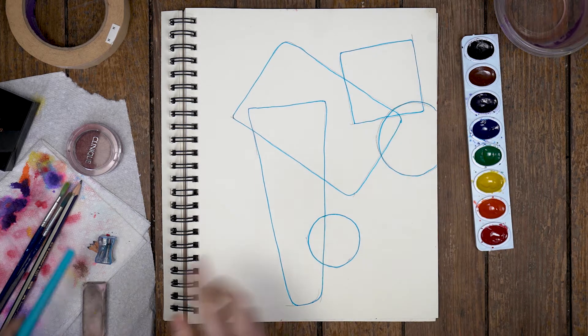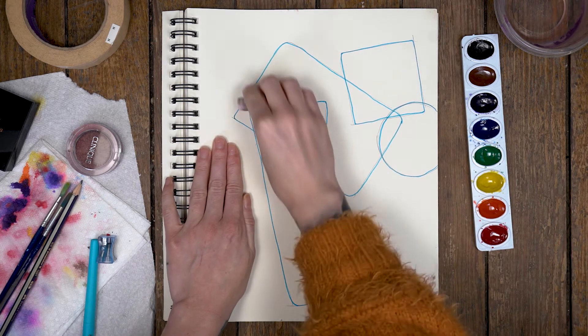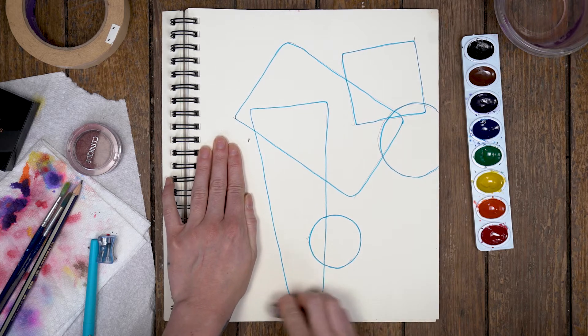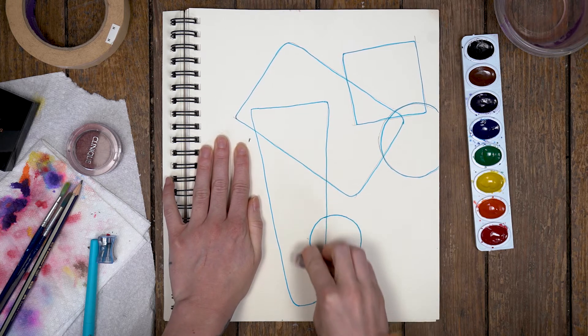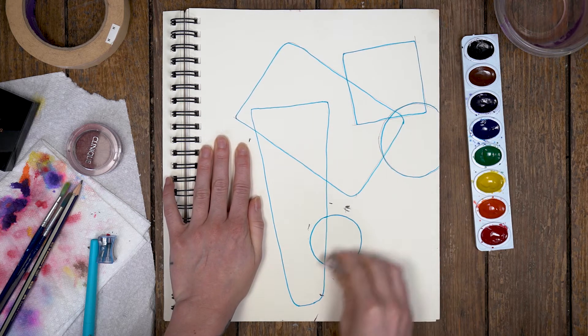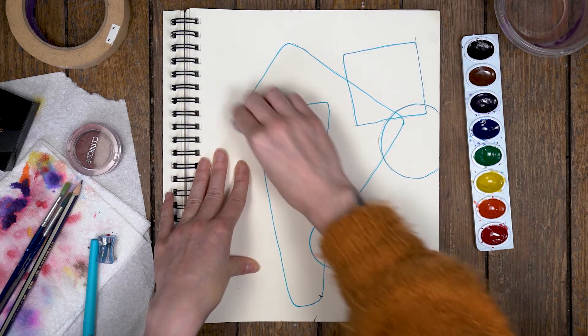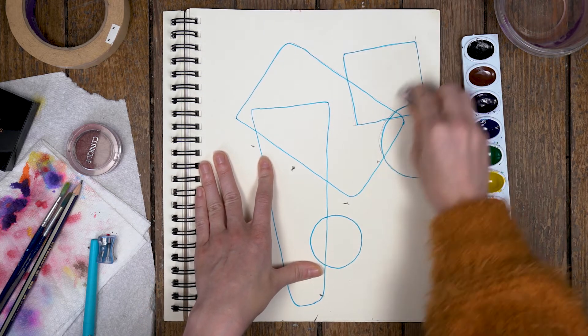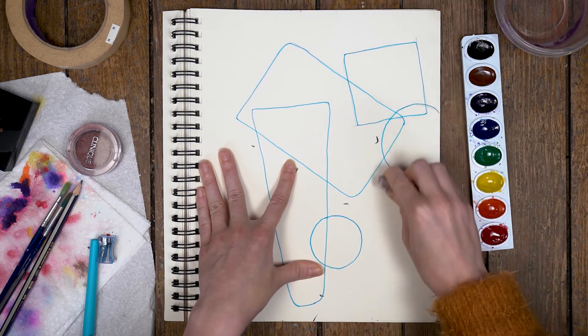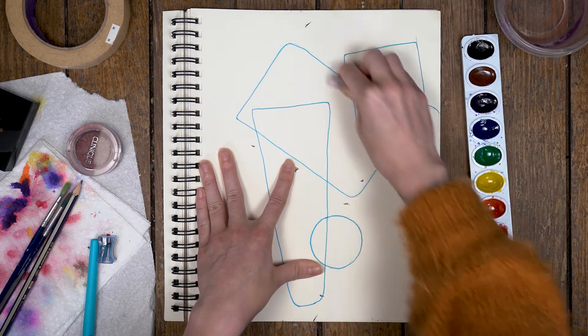Now that I got those outlined, I'm going to take my eraser and just follow my shape lines. That's going to clean up any unwanted pencil line that I have. We're just going to erase those out.